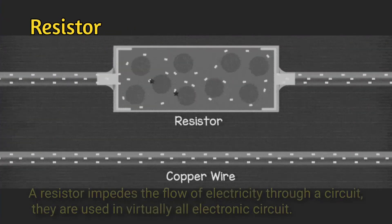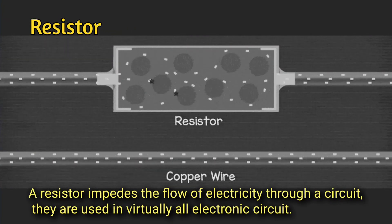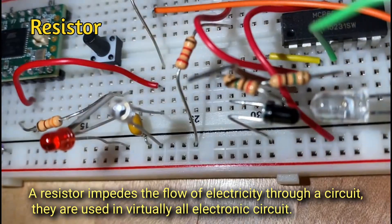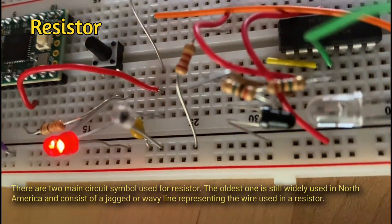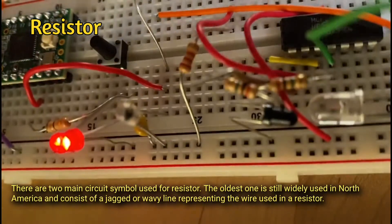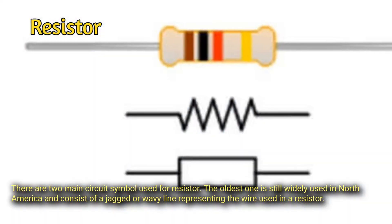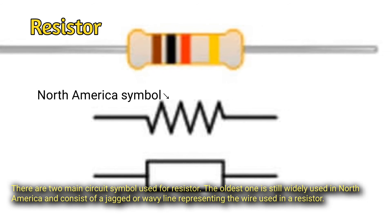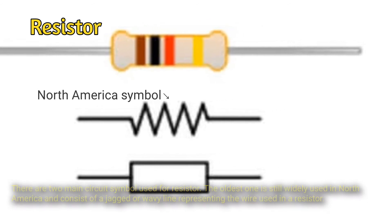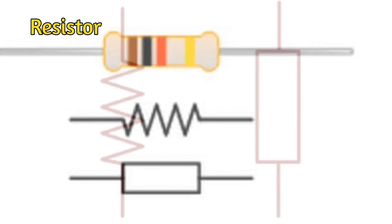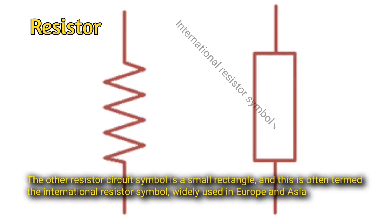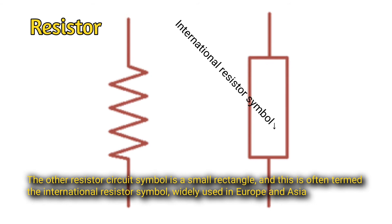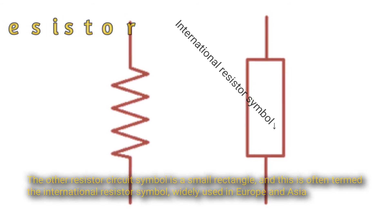Resistors: a resistor impedes the flow of electricity through a circuit and they are used in virtually all electronic circuits. There are two main circuit symbols used for resistors. The oldest, still widely used in North America, consists of a jagged or wavy line. The other resistor circuit symbol is a small rectangle, often termed the international resistor symbol, widely used in Europe and Asia.